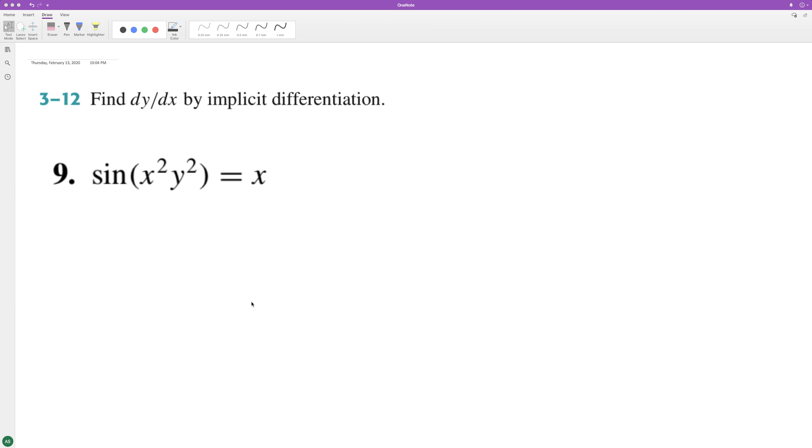Find the derivative of this using implicit differentiation. We'll use the chain rule here. For the derivative of the inside, we're going to use a product rule, so it's going to be 2x times y squared